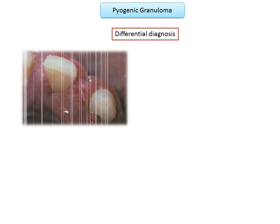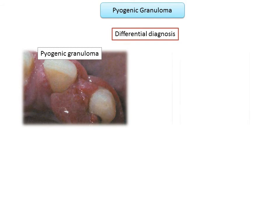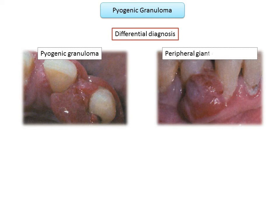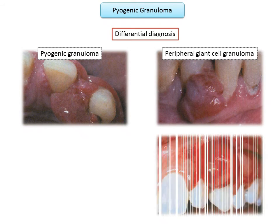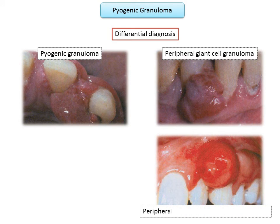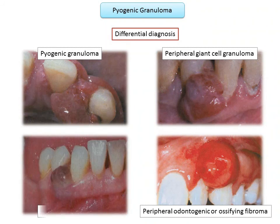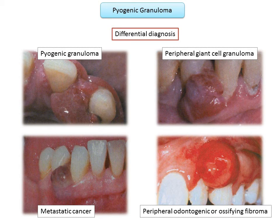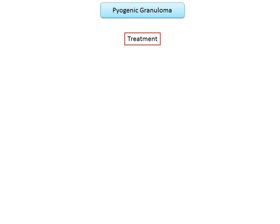In the differential diagnosis, this lesion is clinically similar to peripheral giant cell granuloma, which also presents as a red gingival mass. Histologically, peripheral giant cell granuloma can be distinguished by the presence of giant cells, which are absent in pyogenic granuloma. A peripheral ossifying fibroma may also be considered, though it tends to be lighter in color. Rarely, metastatic cancer may present as a red gingival mass, with biopsy being definitive for diagnosis.